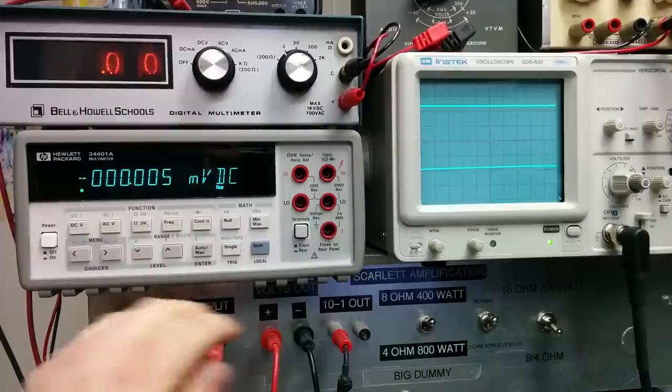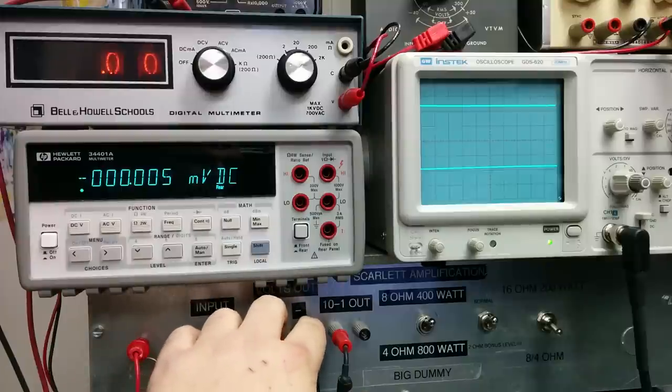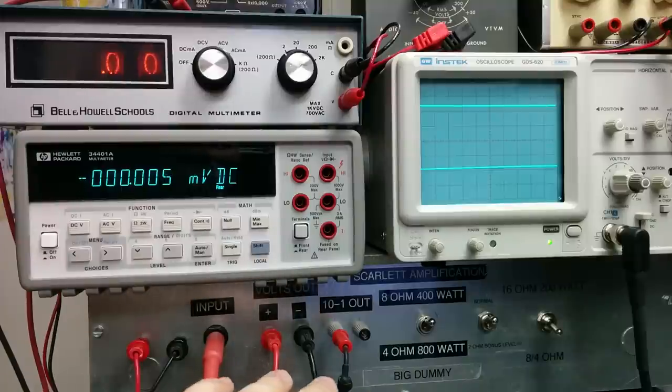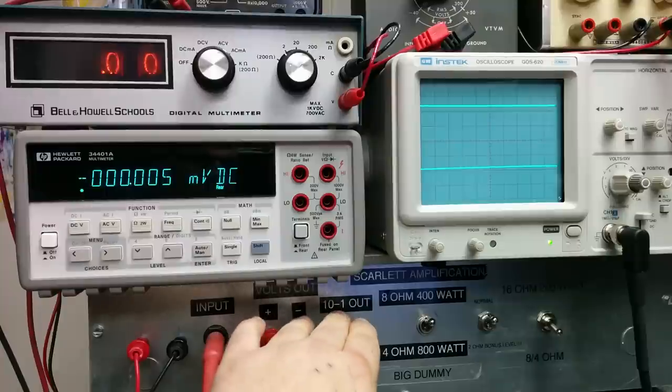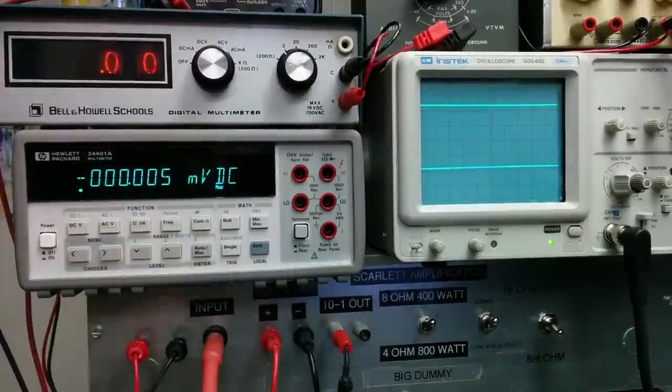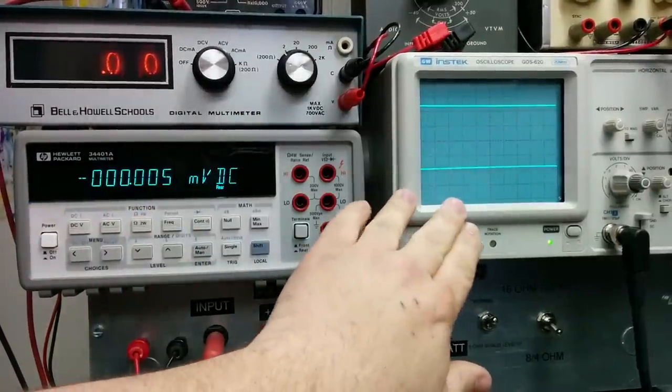The dummy load acts as a speaker that's silent and we pull the signal off of it. It's kind of dumbed down ten to one, so if we have 20 volts coming out of here we have 2 volts coming out here, which is a safe level for my oscilloscope, and then we can watch the shape.